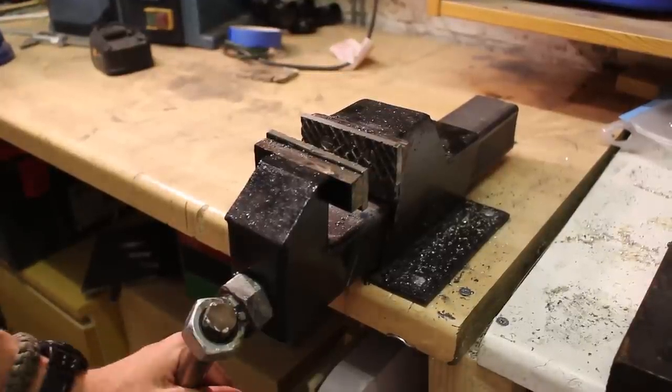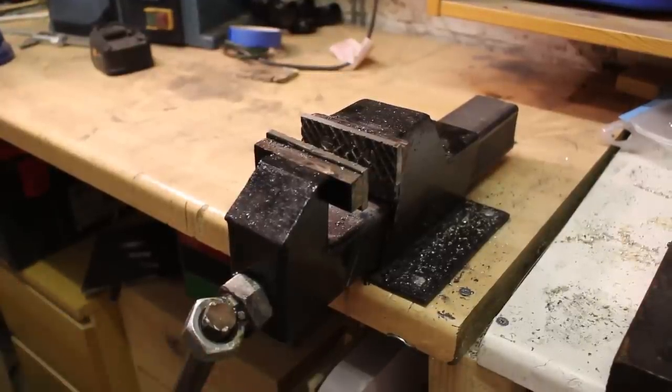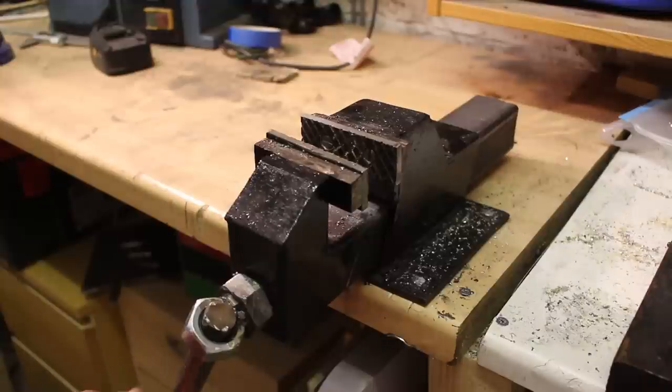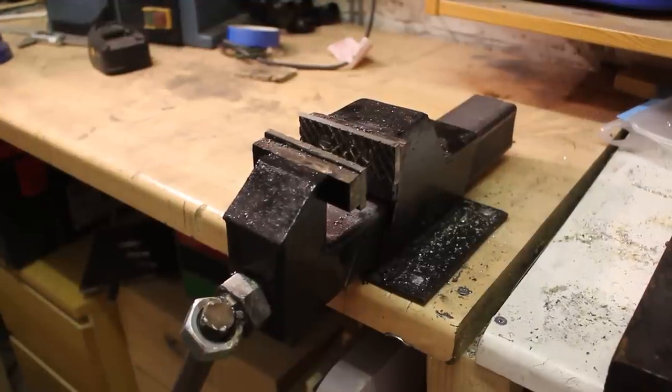This new bench vise that I've made is quite a lot larger and as you can see, it's pretty much solid—nothing moves once I've got it tightened up, and it's got quite a lot more clamping force. The main reason I actually made this bench vise was because I've got a welder and really needed a project to learn how to weld.